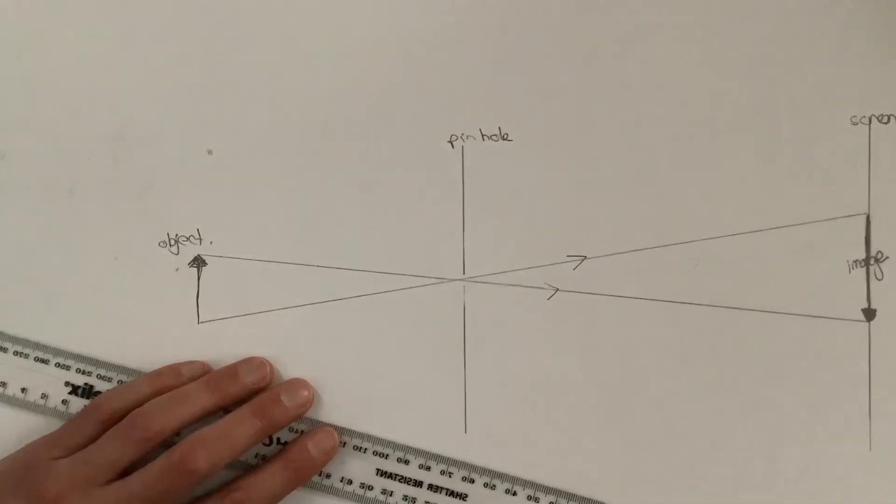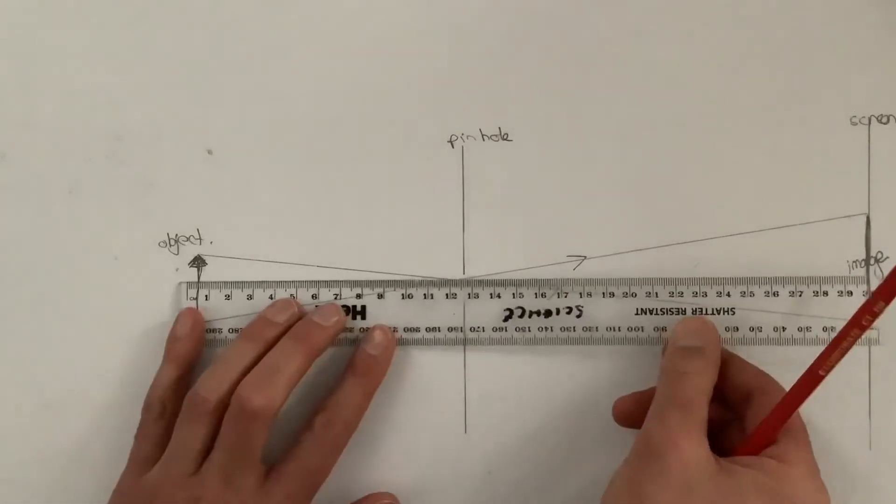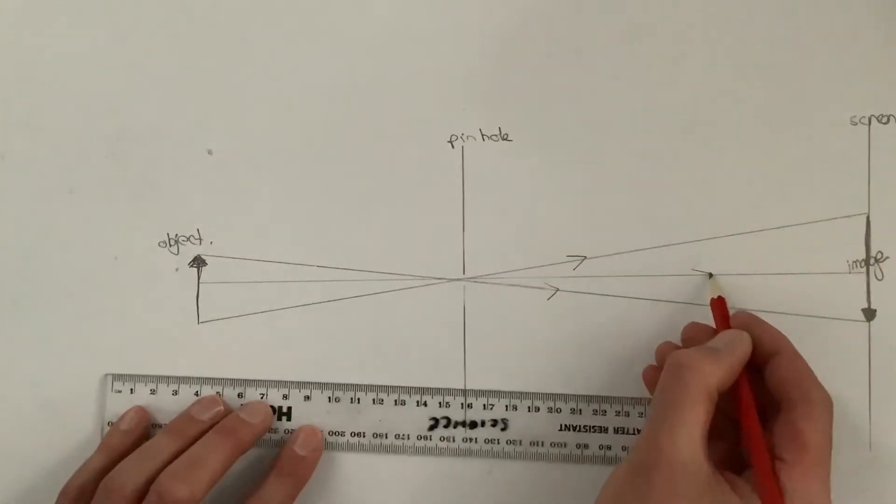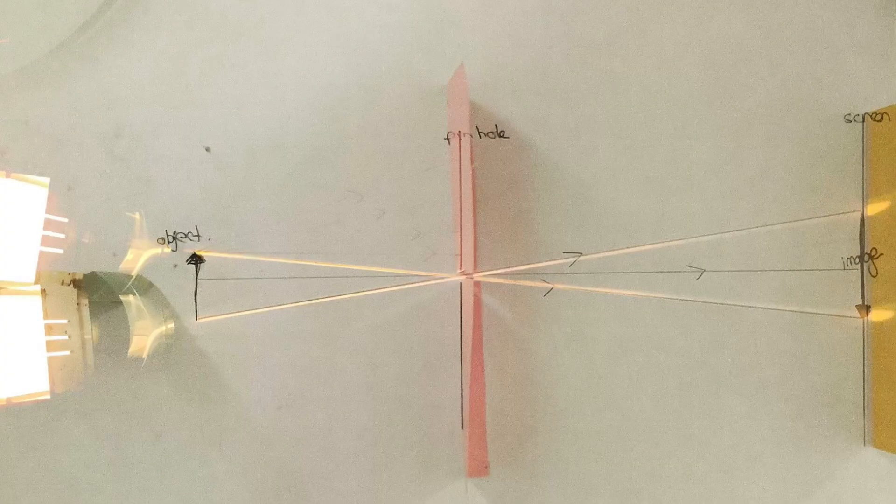That completes the basic ray diagram. But we could add other rays, such as from the center of the object, also going through the pinhole, and that would hit the center of the image.